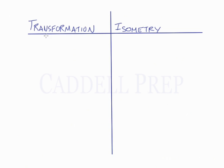So let's take a look at some transformations and the isometry that it has or does not have. So let's start with a point reflection. A point reflection has direct isometry.